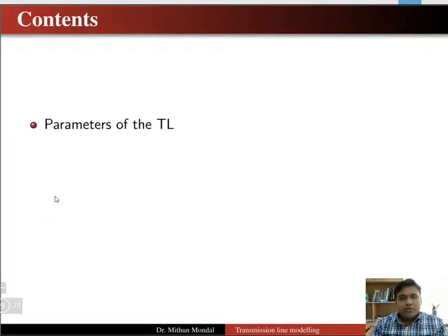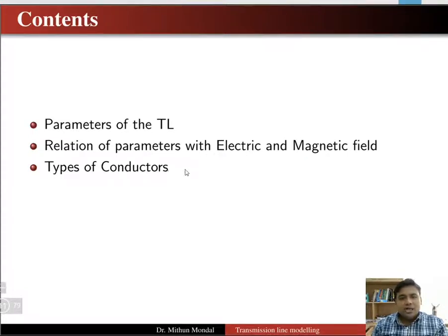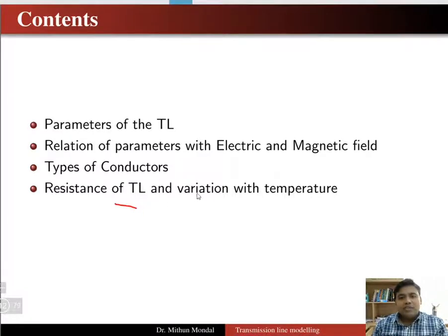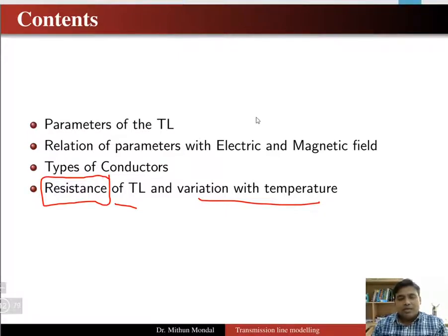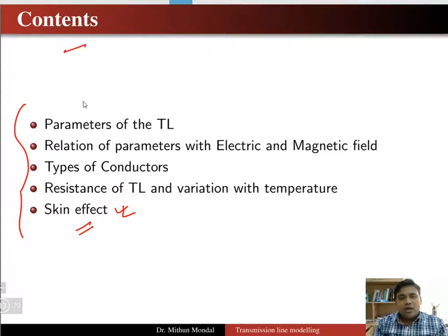In this chapter we are going to study the parameters of the transmission line. We will study the relation of parameters with electric and magnetic fields, types of conductors used for transmission, resistance of the transmission line and its variation with temperature, and what is skin effect and its consequences. These are the contents of lecture number 9.